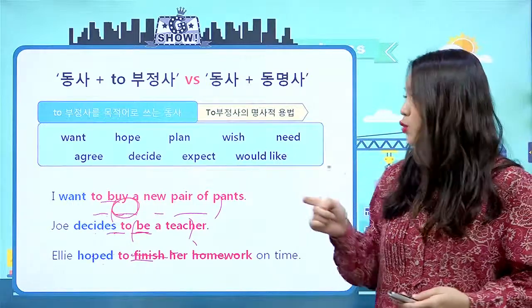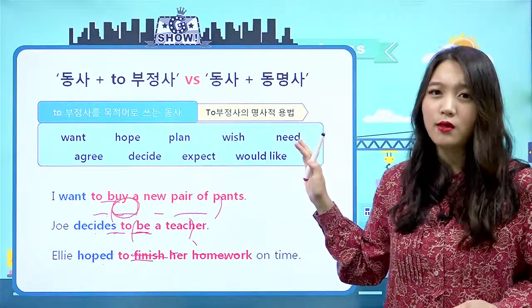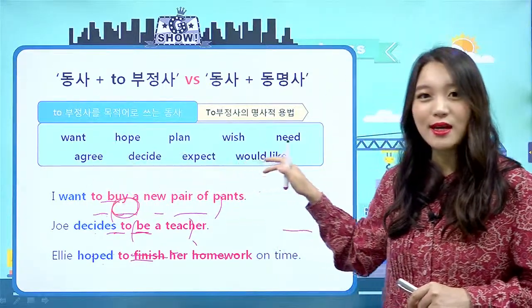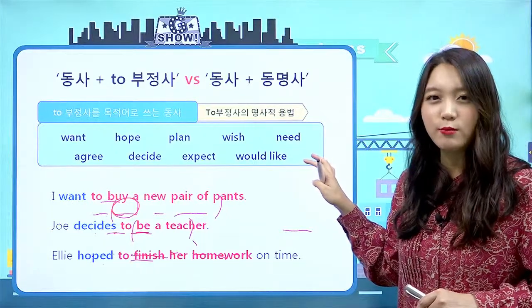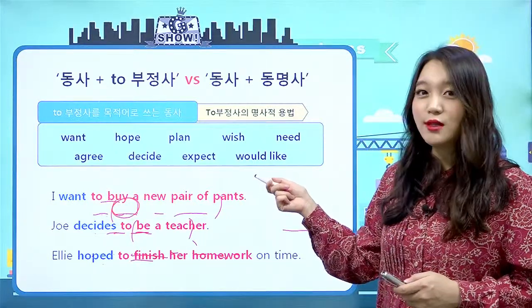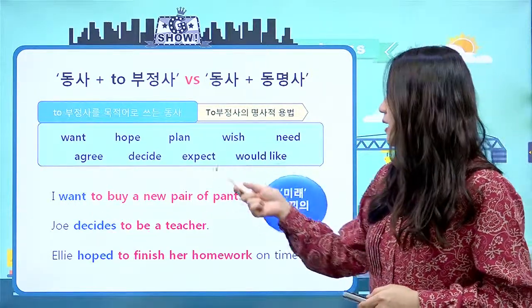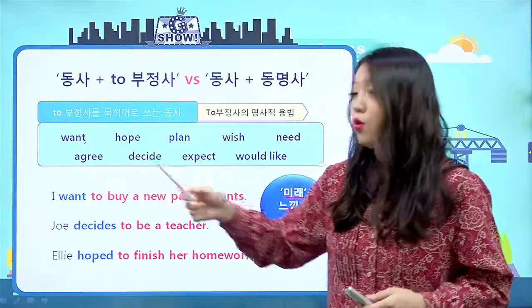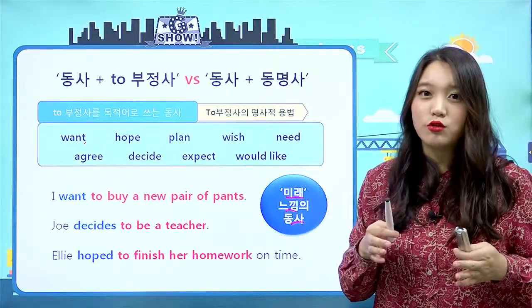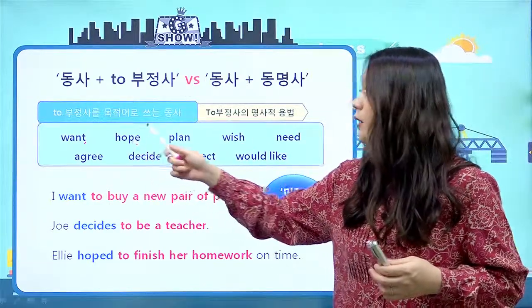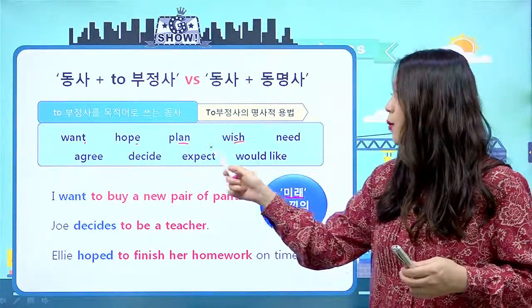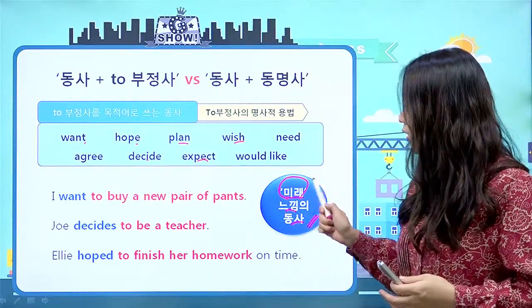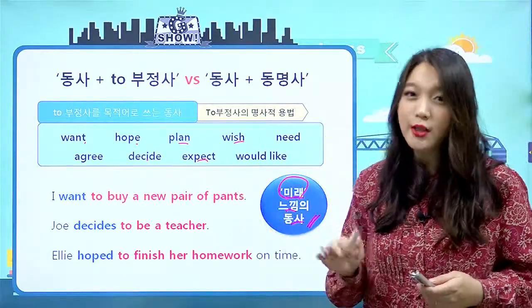이렇게 많은 동사들을 쉽게 외우는 방법이 있어요. 이 동사들의 공통점을 찾아서 묶으면 돼요. 이 동사들의 공통점은 '미래 느낌의 동사'라는 거예요. 원하는 것도 지금 갖고 있지 않기 때문에 원하는 거고, 희망하다, 계획하다, 소망하다, 기대하다, 결정하다 다 미래의 느낌을 가지고 있죠. 이렇게 '미래 느낌의 동사'로 묶어서 생각하면 훨씬 외우기 편할 거예요.